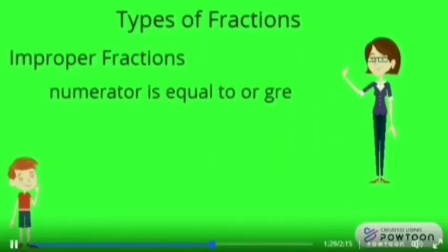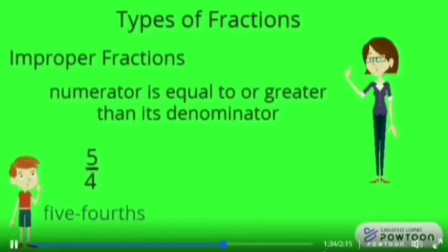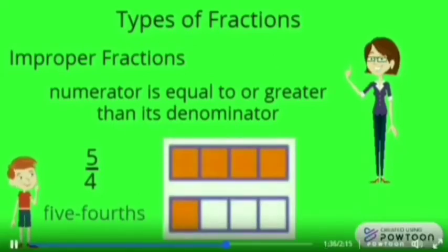Improper fraction: if the numerator is equal to or greater than its denominator. 5/4 - 5 is greater than 4. Therefore, 5/4 is an improper fraction.